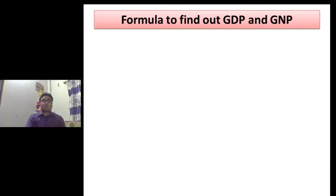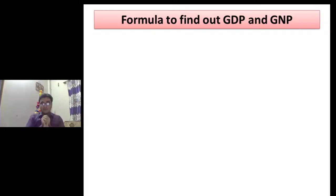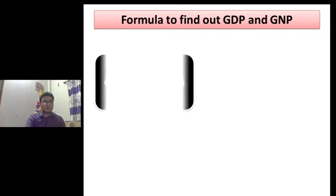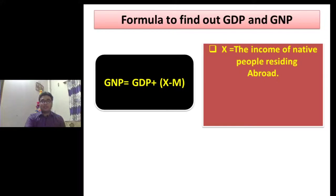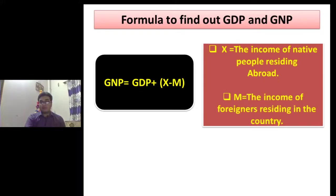Now I am going to show you a formula to find out the GDP and GNP of a country. This is the formula: GNP = GDP + X − M. Here, X equals the income of the native people residing abroad, and M equals the income of foreigners residing in the country. That is the formula to find out GDP and GNP.